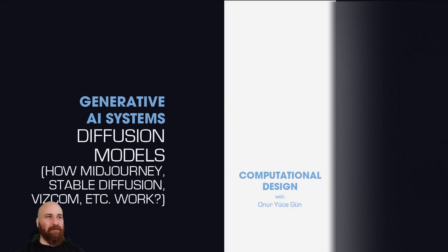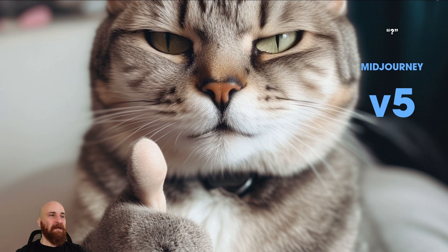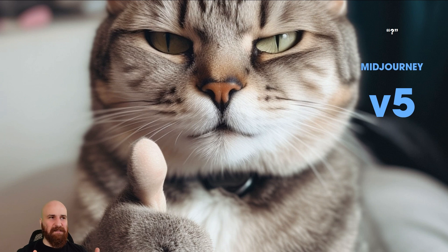Today we're going to talk about diffusion models. If you've been using MidJourney, Stable Diffusion, Disco Diffusion, Runway, or DALL-E, these systems are all trained using diffusion systems. They're generative AI systems that use diffusion models. This is an image generated using MidJourney version 5, released about three to six months ago. It was shocking because the model was much better than previous versions.